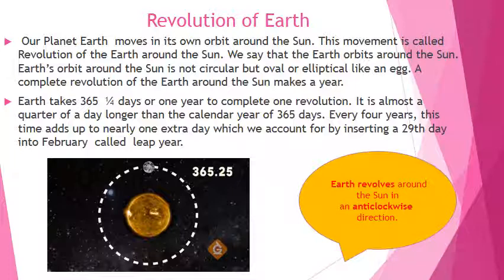Earth's orbit around the sun is not circular but oval or elliptical, like an egg. A complete revolution of the Earth around the sun makes a year. Earth takes 365 days, or one year, to complete one revolution.